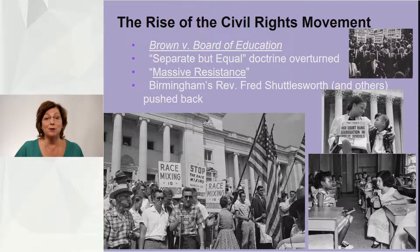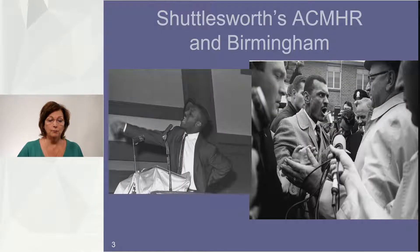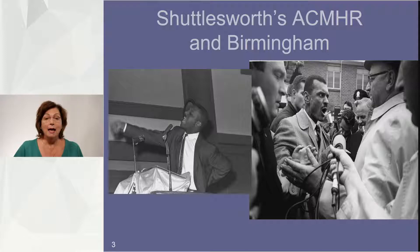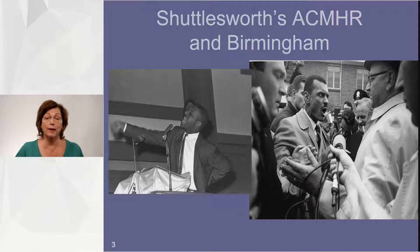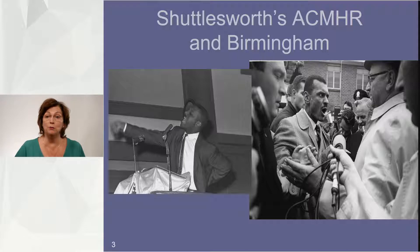In Birmingham, Reverend Fred Shuttlesworth was leading a local civil rights movement. Other communities had grassroots movements as well. Fred Shuttlesworth started the Alabama Christian Movement for Human Rights during the 1950s, and this group led boycotts, peaceful protests, and sued to dismantle segregation. For his efforts to enroll his children in public school in Birmingham, Reverend Shuttlesworth was attacked, beaten, arrested, sentenced to hard labor in one situation, and had his home and church bombed. Later, Shuttlesworth's movement would bridge with Martin Luther King Jr.'s national movement in Birmingham. Shuttlesworth made all the difference to the movement in Birmingham.